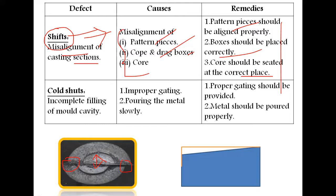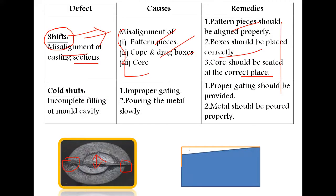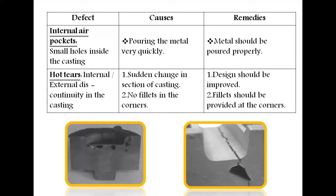Cold shuts refer to incomplete filling of the mold cavity. The molten metal does not reach the full mold cavity before solidification. The causes are improper gating and pouring the molten metal too slowly or at too low a temperature. Proper gating should be provided, metal should be poured properly, and the correct temperature must be maintained so the metal reaches the mold cavity before it solidifies.